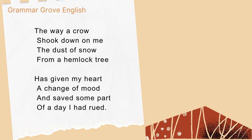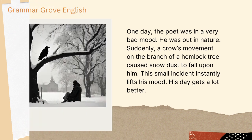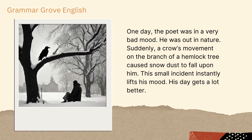Let's take a look at the very last line of the poem: 'And saved some part of a day I had rued.' Here, 'I' is the poet or the narrator, and he is saying that he was having a bad day. He had rued the day — 'rued' means regretted. One day the poet was having a really bad day; nothing was going according to his plan. So he was out in nature, beside a hemlock tree covered in snow.